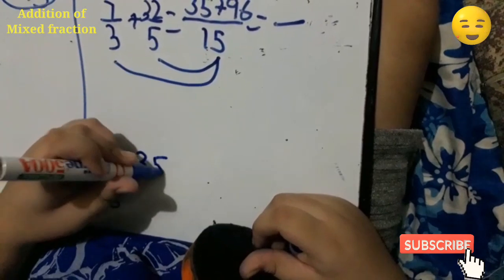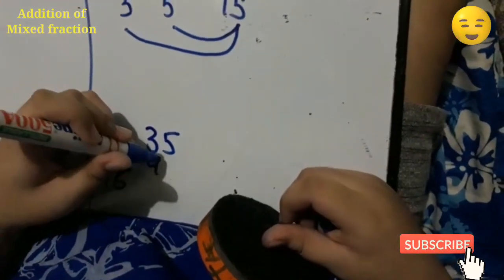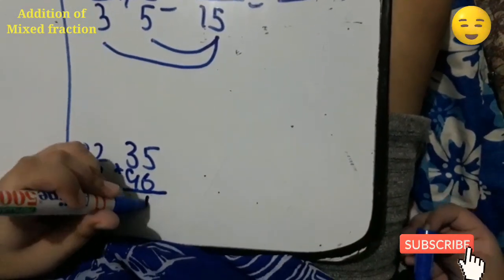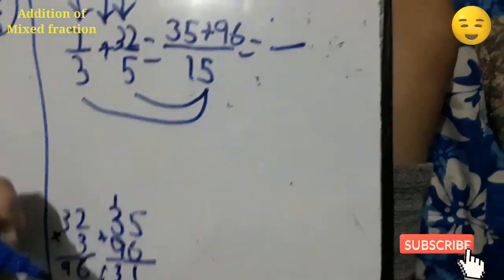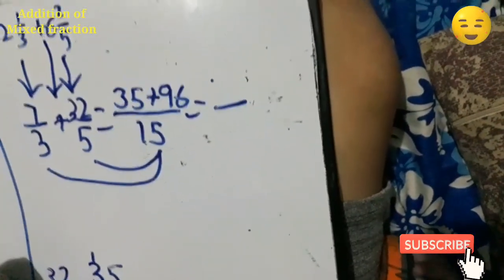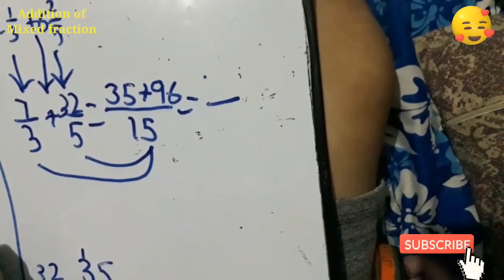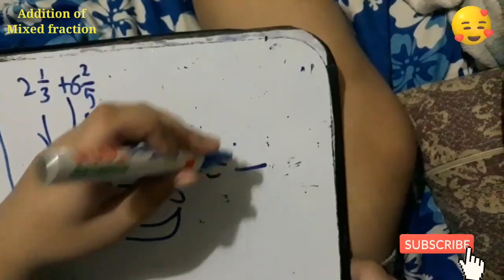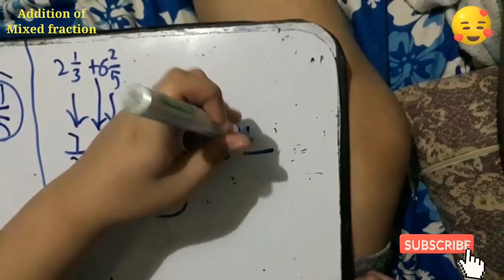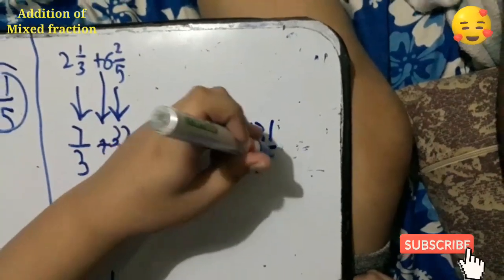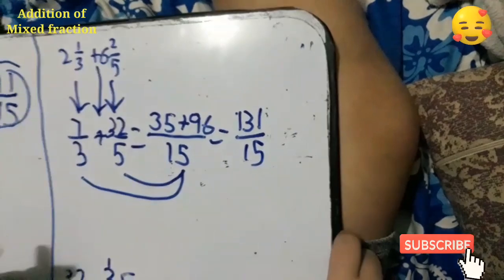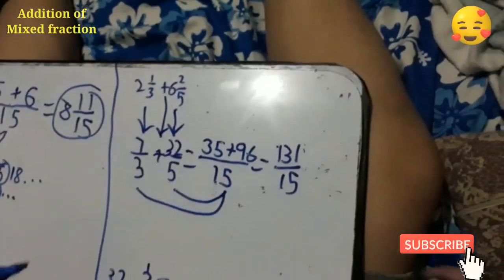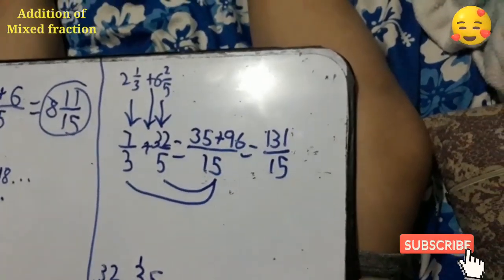All you have to do is add 35 plus 96. Just add in long method. 35 plus 96 is equal to 131. So you put 131 over 15. Is it the final answer? It's obvious that it's a big no. So you need to divide it because it's an improper fraction. We must turn it into mixed fraction.